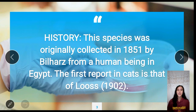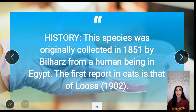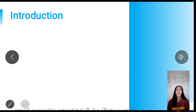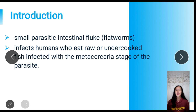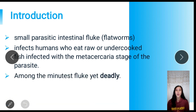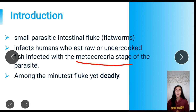A brief history about this parasite: it was first originally collected by Bill Harris in 1851 from a human being. However, von Siebold renamed the parasite Distoma heterophyes. It is a small parasitic fluke worm that primarily infects humans who eat raw or undercooked fish infected by the metacercaria stage of the parasite, which is the infective stage. It is among the minutest flukes, yet it can be deadly.